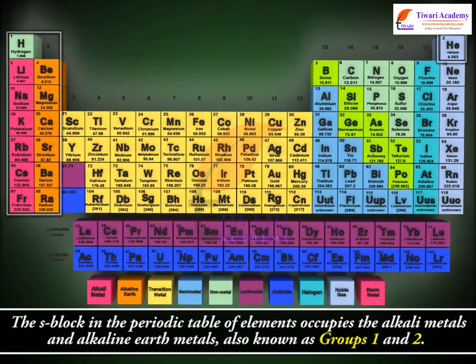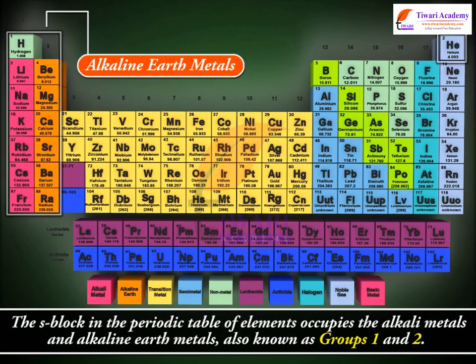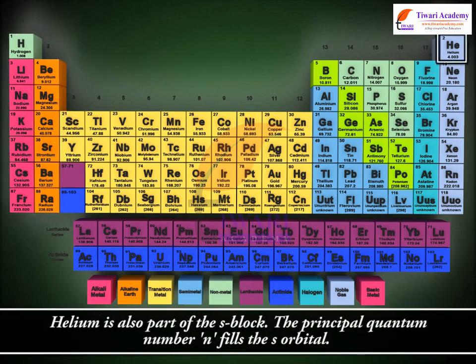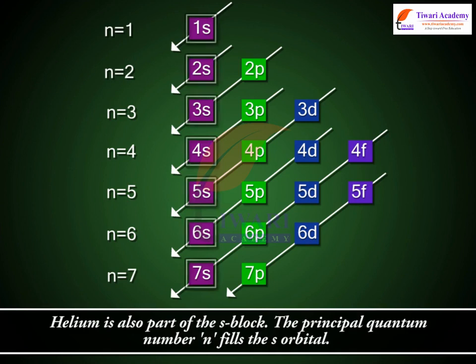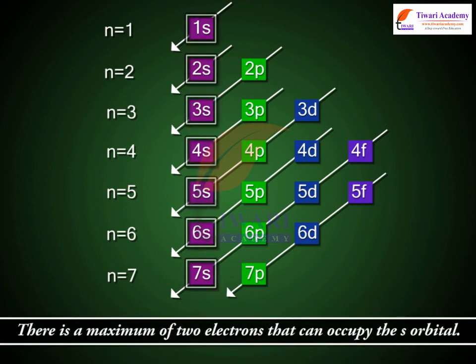The S block in the periodic table of elements occupies the alkali metals and alkaline earth metals, also known as groups 1 and 2. Helium is also part of the S block. The principal quantum number, n, fills the S orbital. There is a maximum of 2 electrons that can occupy the S orbital.